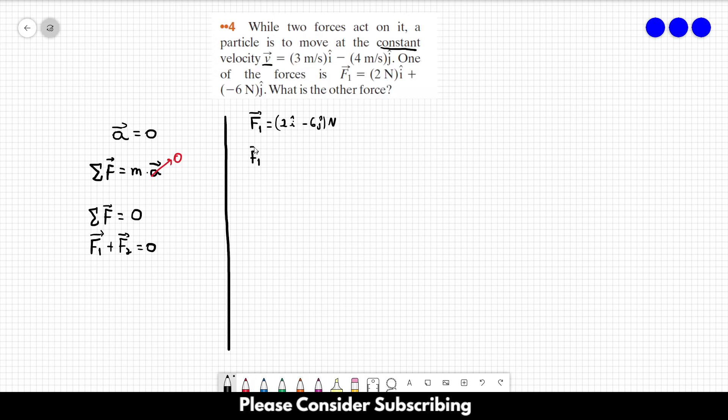So F1 plus F2, let's first write F2 as a generic vector. So let's say that F2 is equal to F2x in the I direction